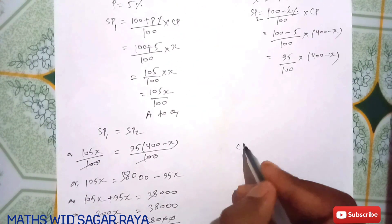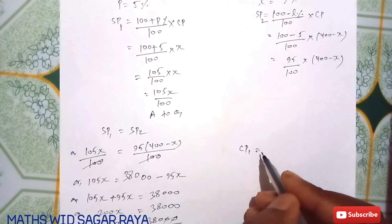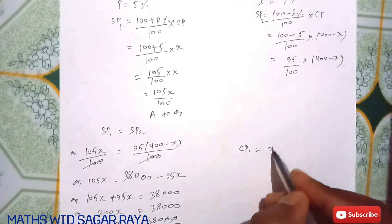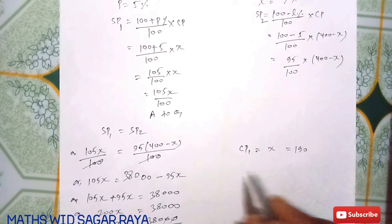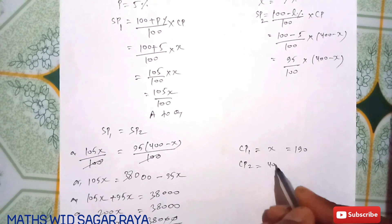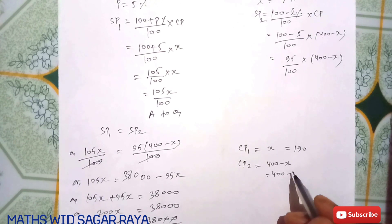When you know the value of X, you can find CP1. In the first case, CP = X = 190. In the second case, CP = 400 - X = 400 - 190 = 210.